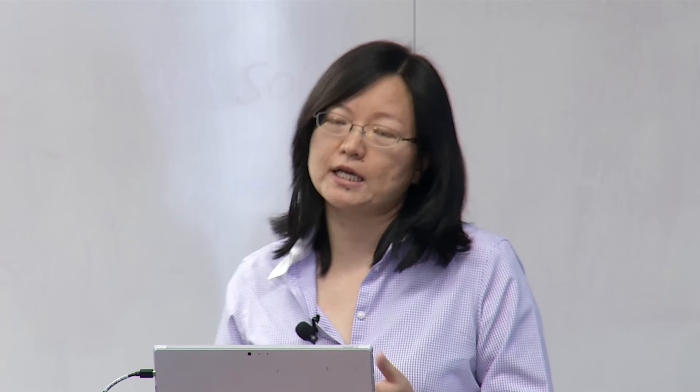Another application we are working on is an automated information extraction process for bridge deck evaluation using ground penetrating radar. In this application, we developed an interference removal process and an adaptive migration process. Starting from raw data collected from a bridge deck, after going through our process, we can provide a much clearer image with accurate rebar locations, and also information about relative dielectric permittivity distribution, which can be used as an indicator of bridge deck condition.